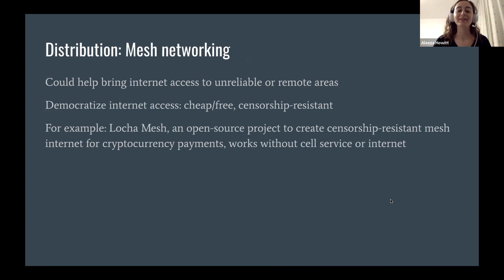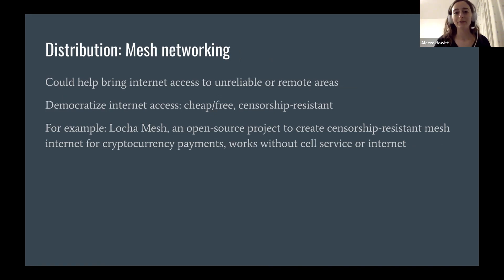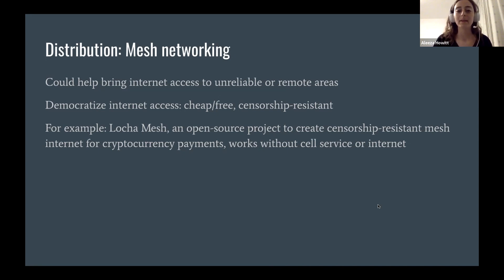One of the major issues for actually getting digital money into the hands of people is internet access. A lot of cryptocurrencies — people may want to use them, but it's just not practical because the internet goes out so often. That also applies to any sort of digital currencies; if you may not have cell service, you can't use your mobile money. One potential way to begin thinking about solving this is to focus on mesh networking devices and build a better internet system that makes connectivity accessible for everybody.